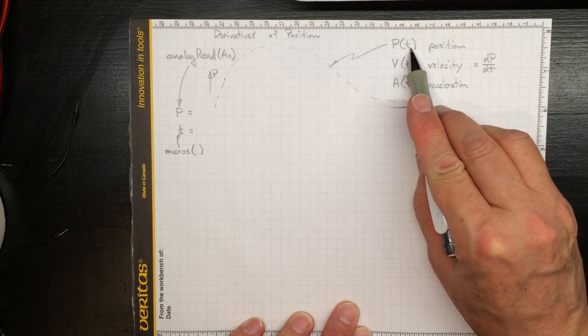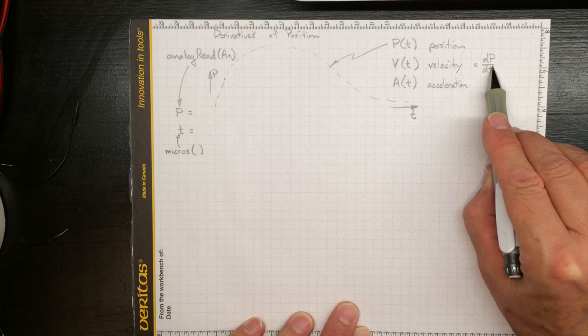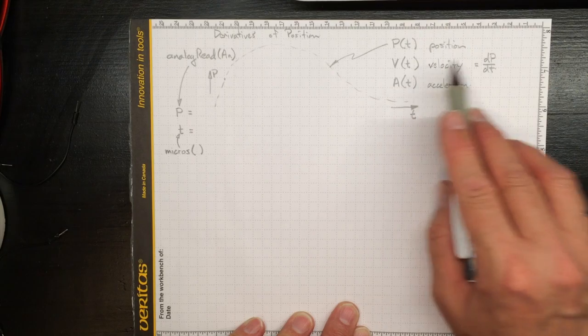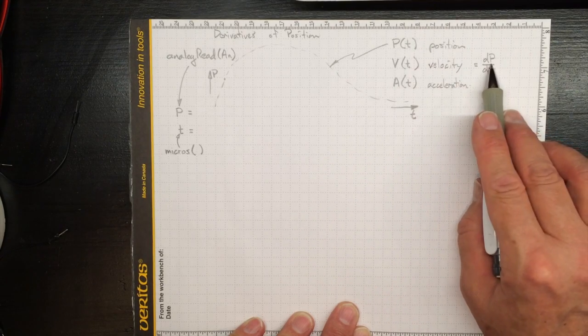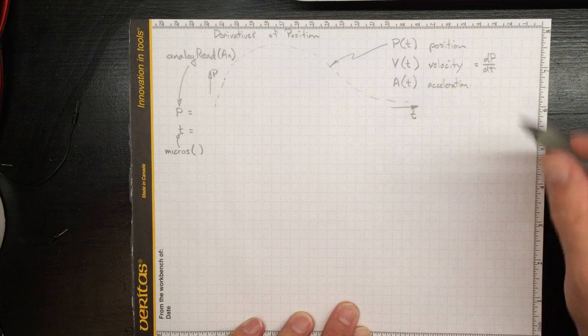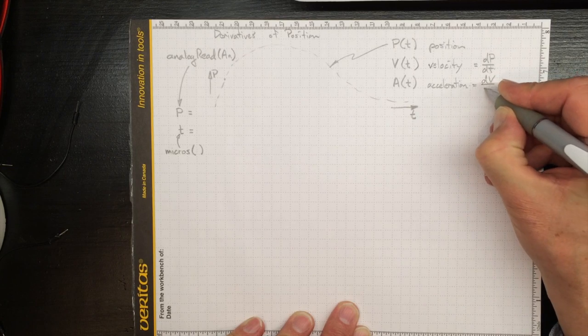So if we knew what that function was, and we were good at calculus, we could just do a derivative and find out. Likewise, if we knew the velocity, because we took the derivative of the position, we could find the acceleration by taking the derivative of the velocity. Derivative of velocity with time.